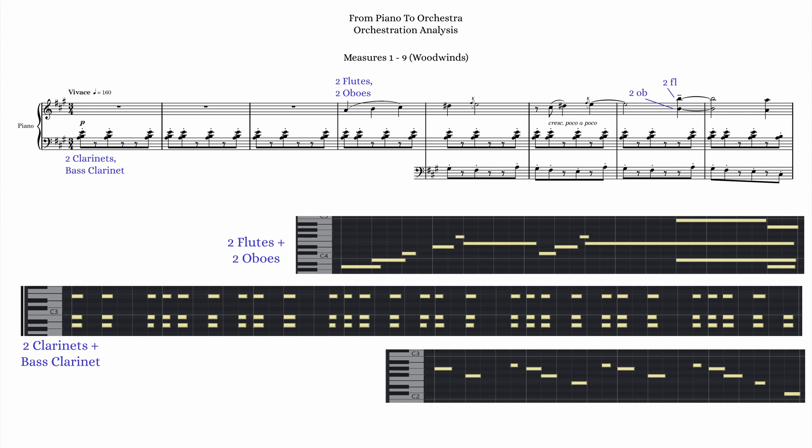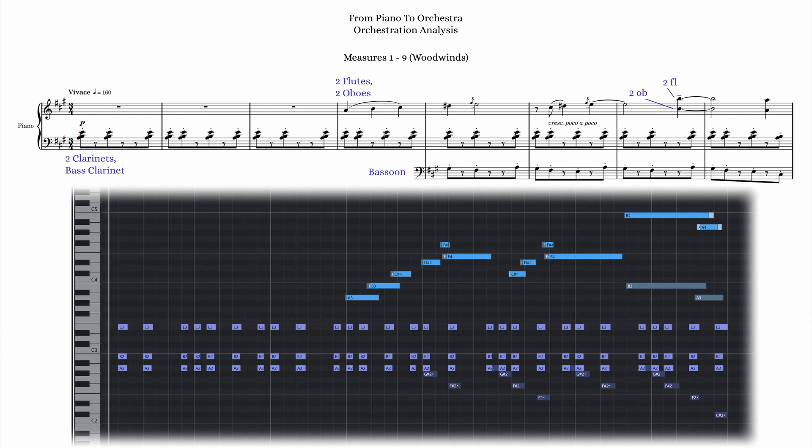That leaves the measure 5 counterline material for 2 bassoons. You can see I've distributed these parts based on the range of the instruments and how those instruments would sound in the written registers.